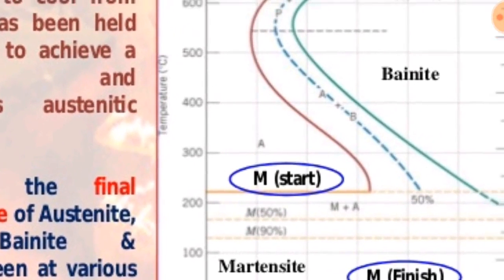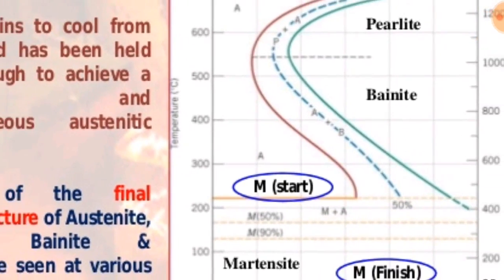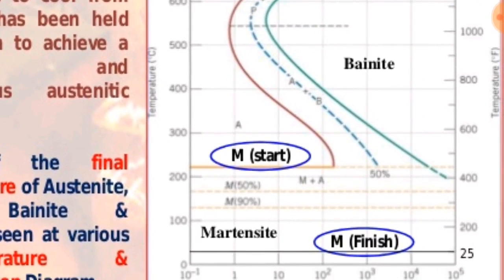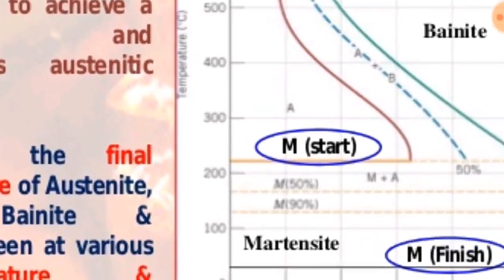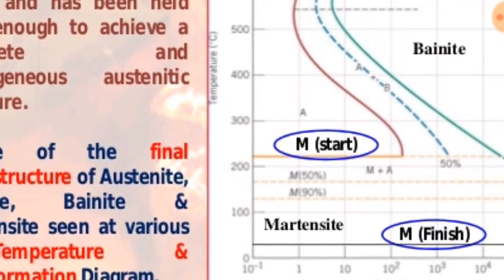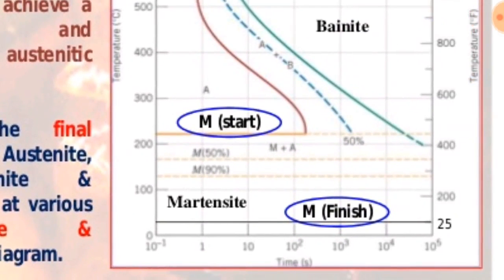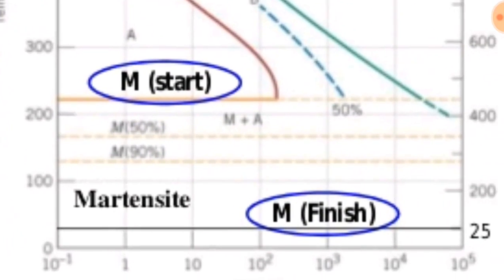Here we see the martensite start is above 200 degrees Celsius and martensite finish is at 25 degrees Celsius.